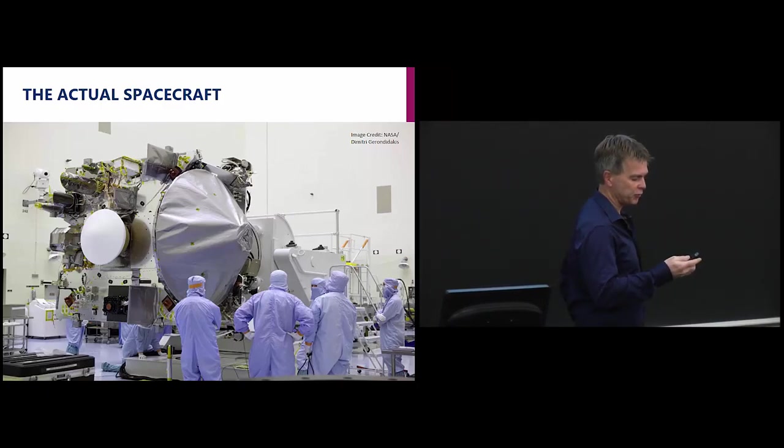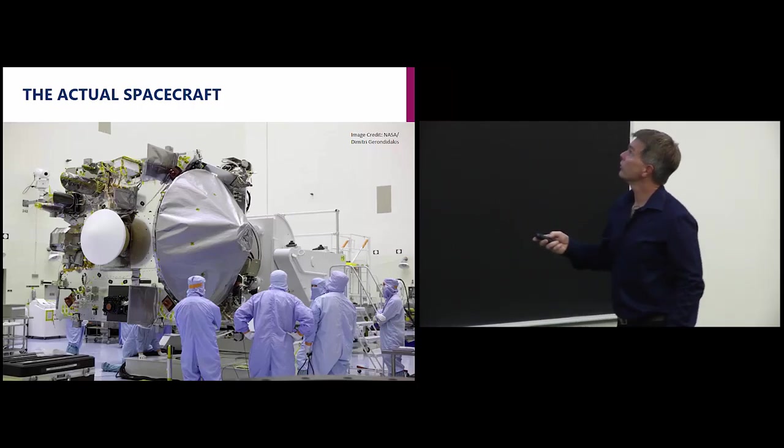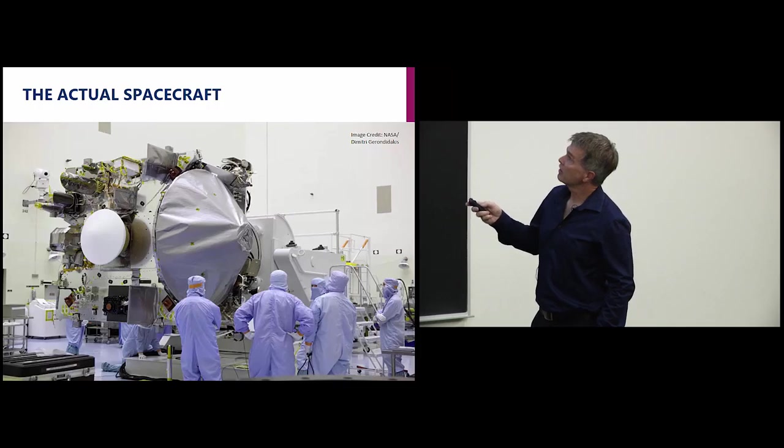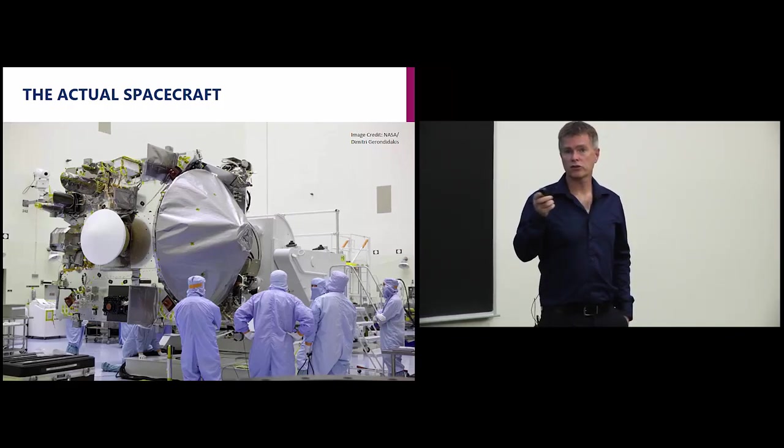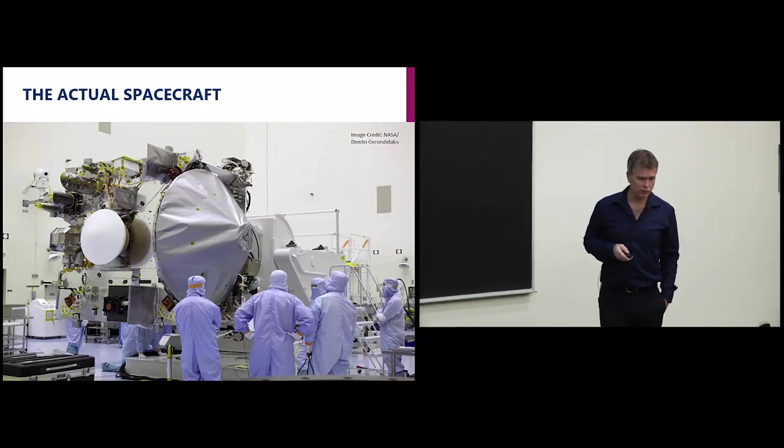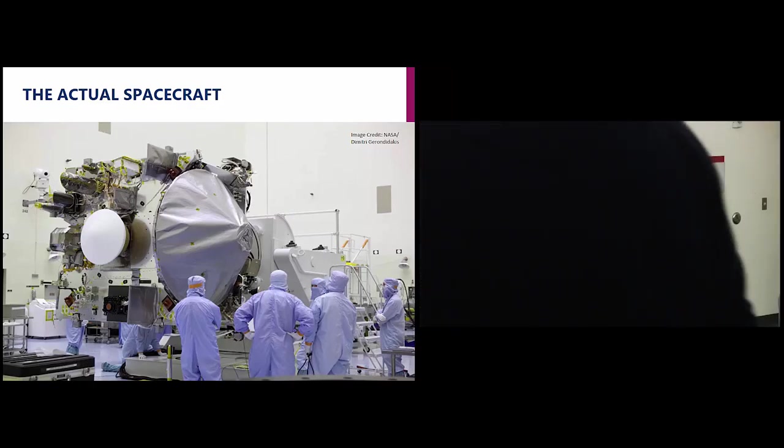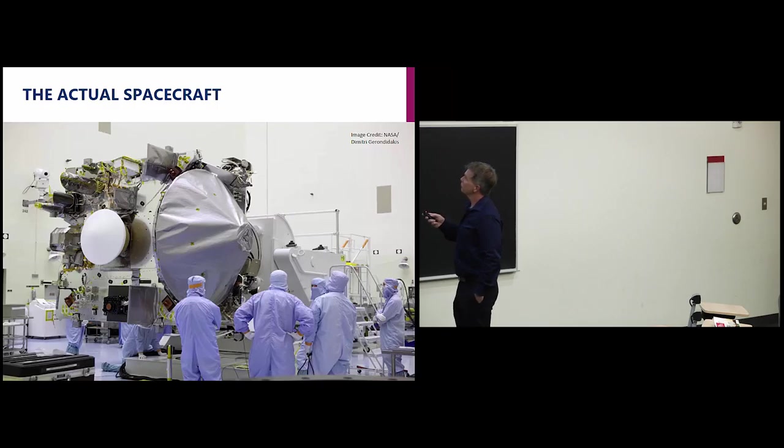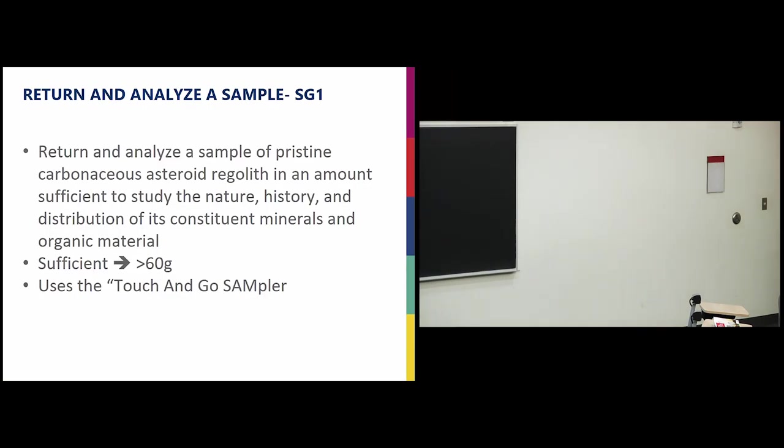So here's a picture of the actual spacecraft. This gives you an idea of the size and the complexity. This is the big communications antenna. This is the sample return capsule. And this is the science deck. All the science instruments sit on the science deck, as well as that long arm. And what I was really struggling with here is the laser altimeter that Canada is providing and I'm responsible for.